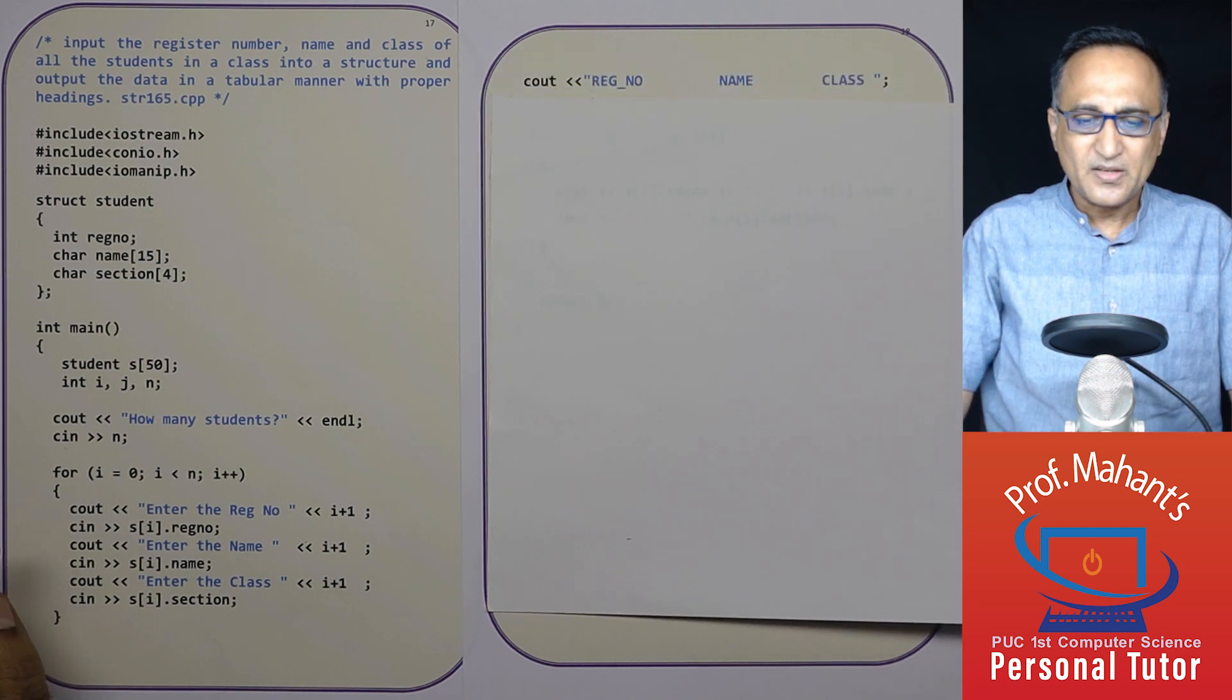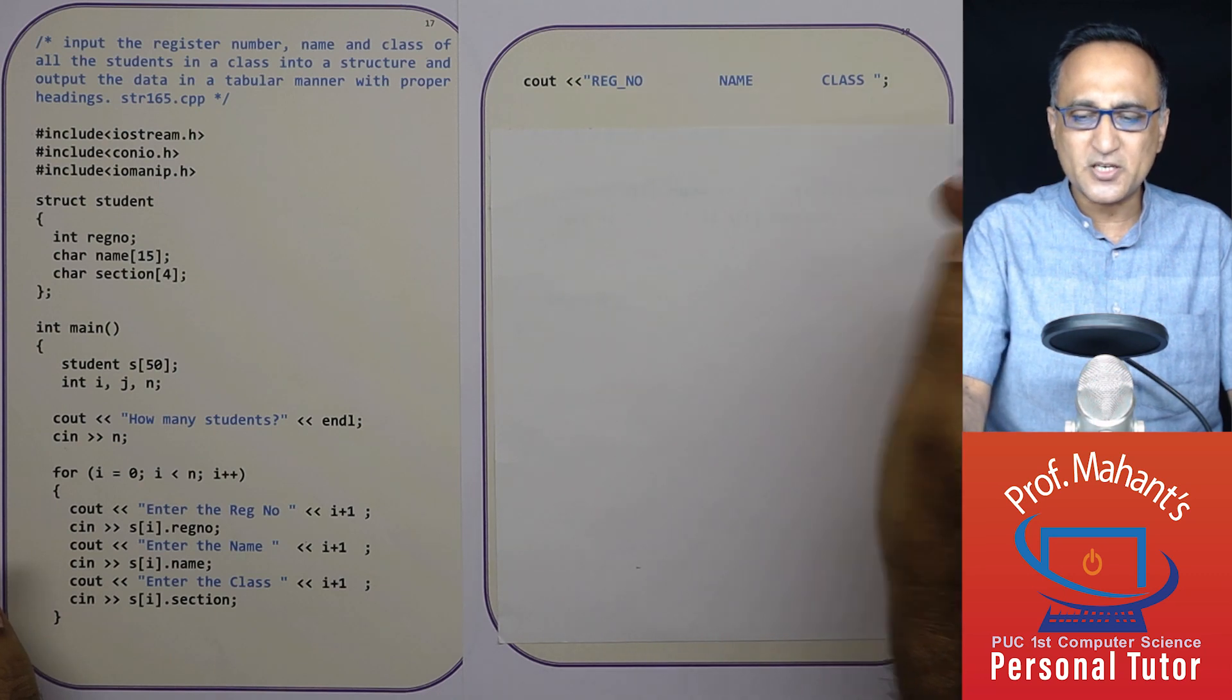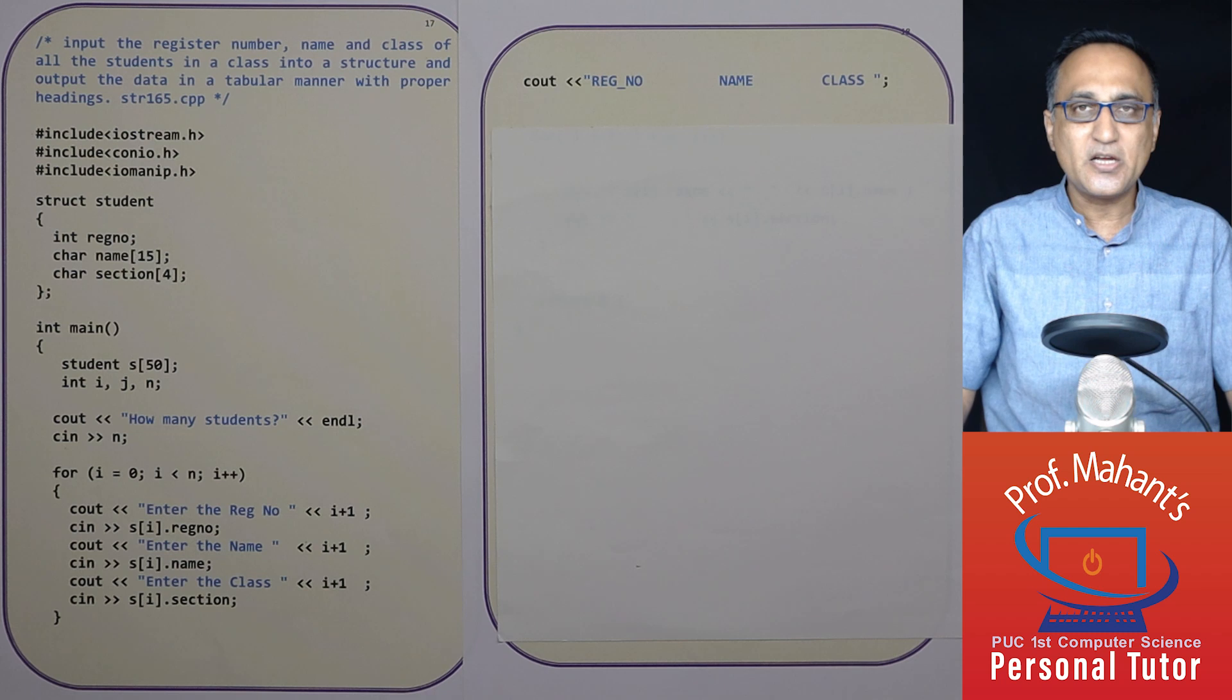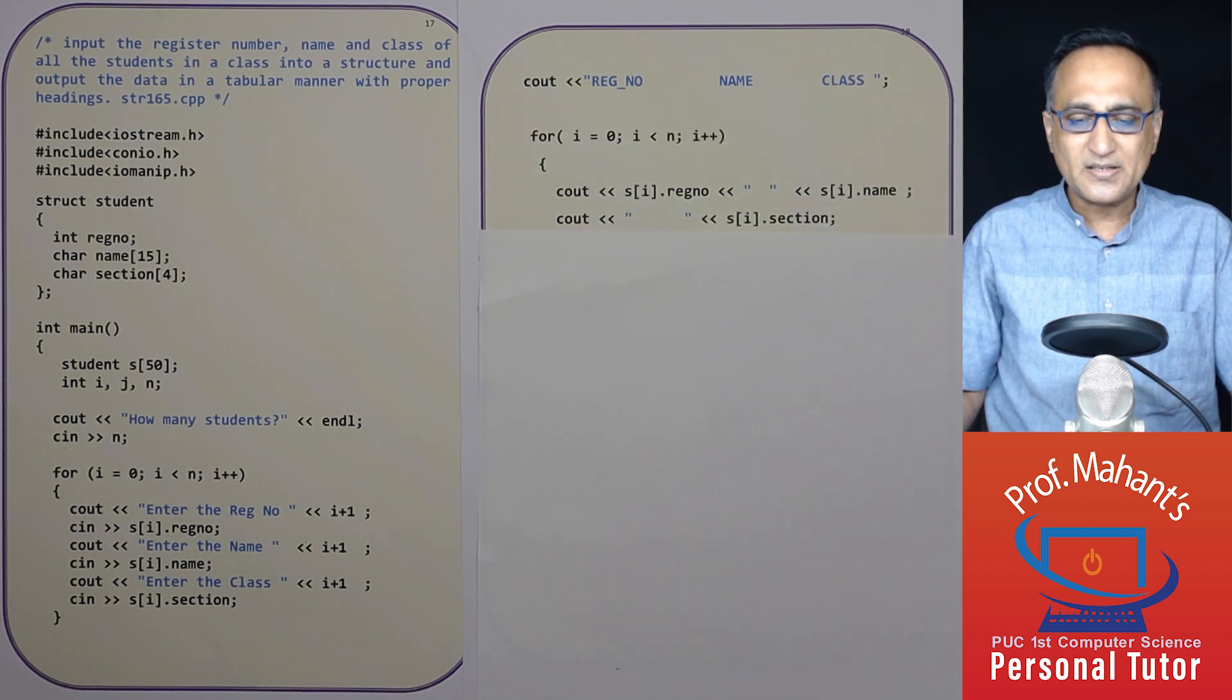Now I'm just printing out this stuff so that these are just the headings registration number, name, section and class. These are just the headings because the problem has asked us to print in a tabular or column form the data.